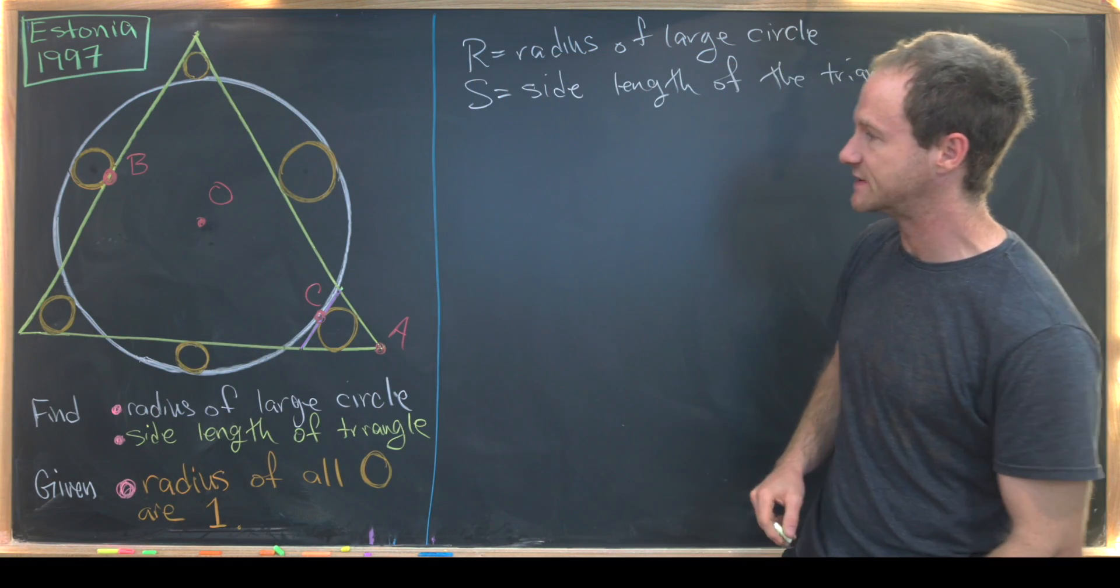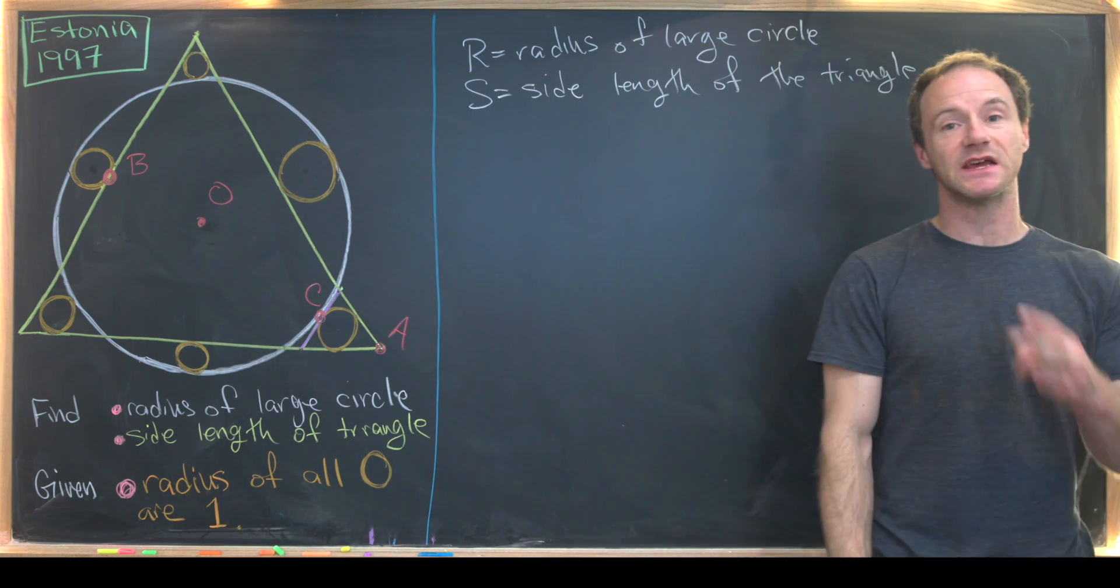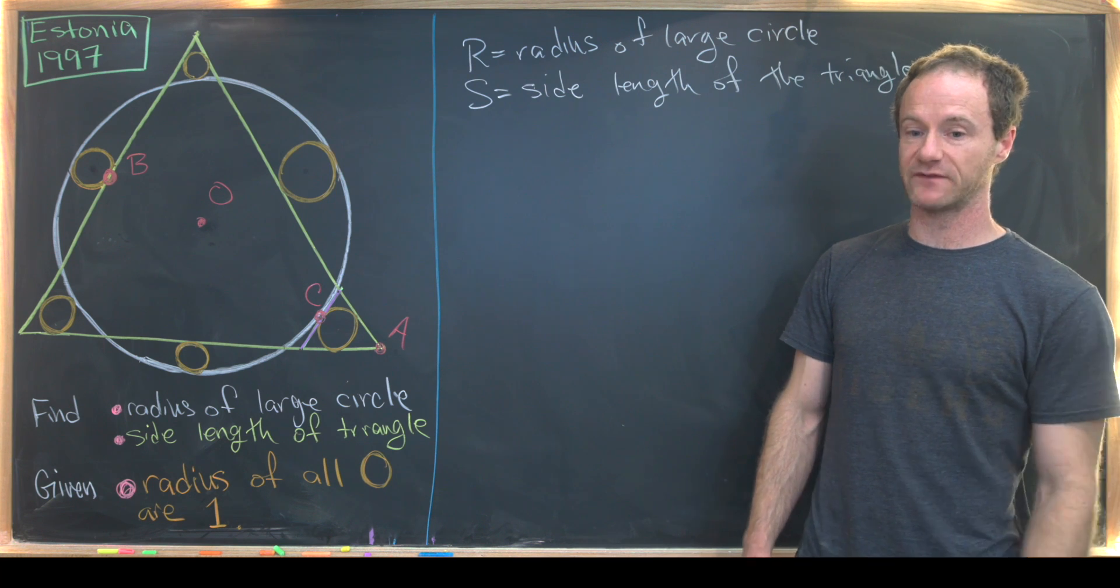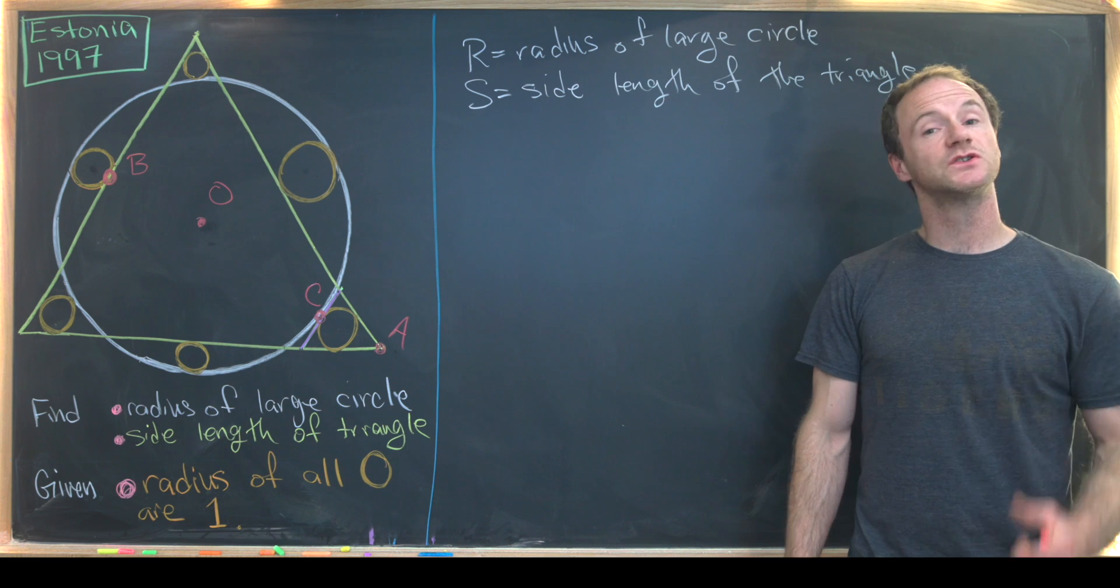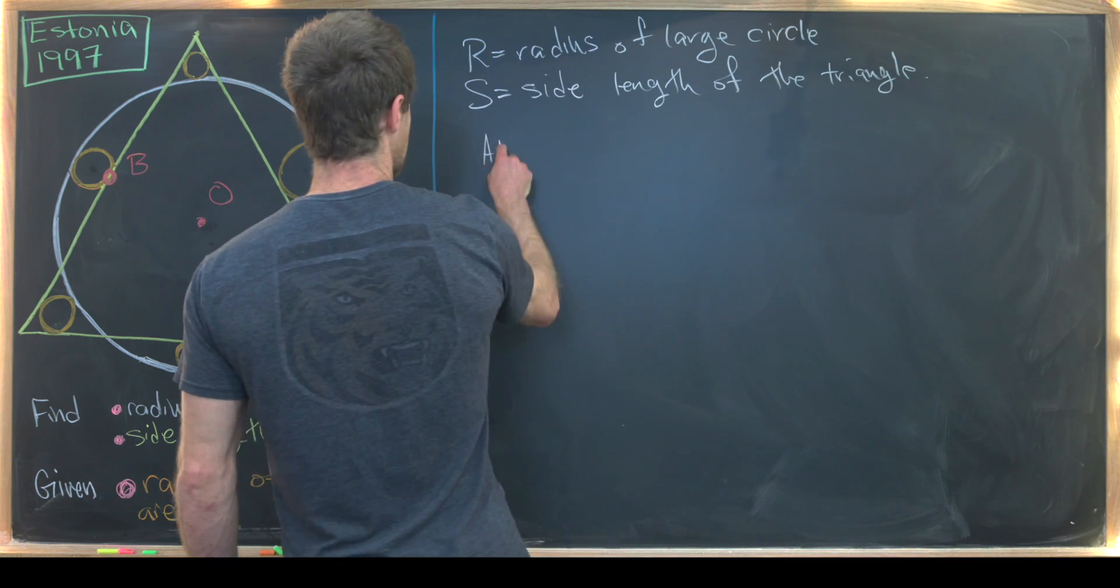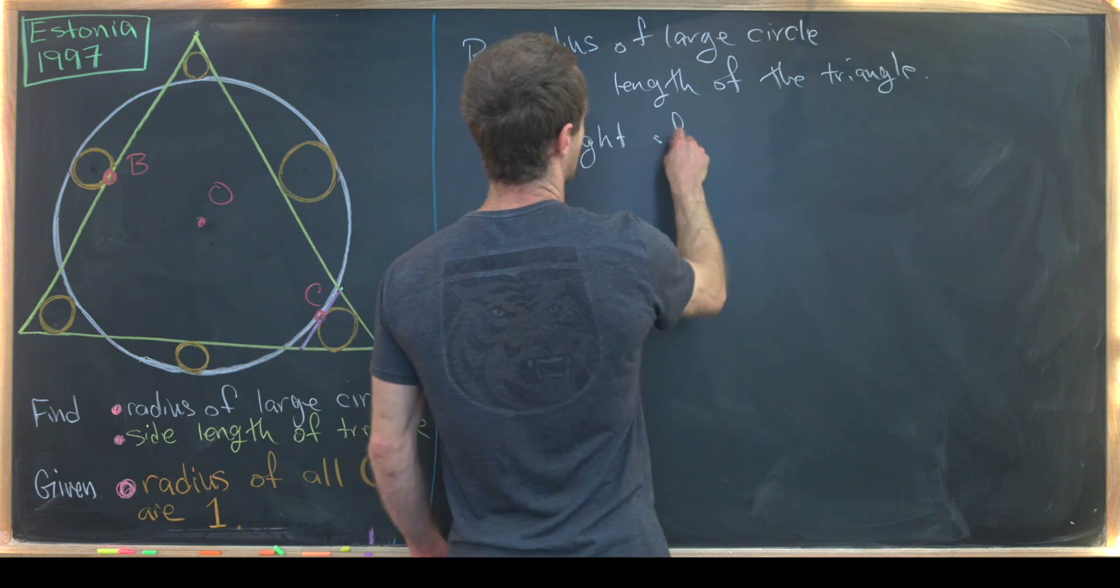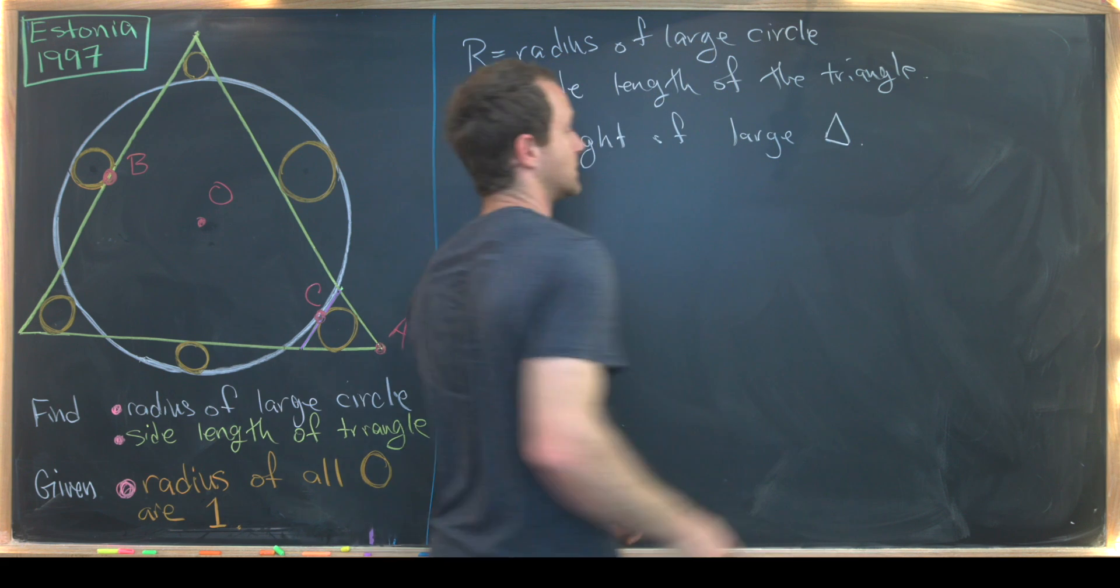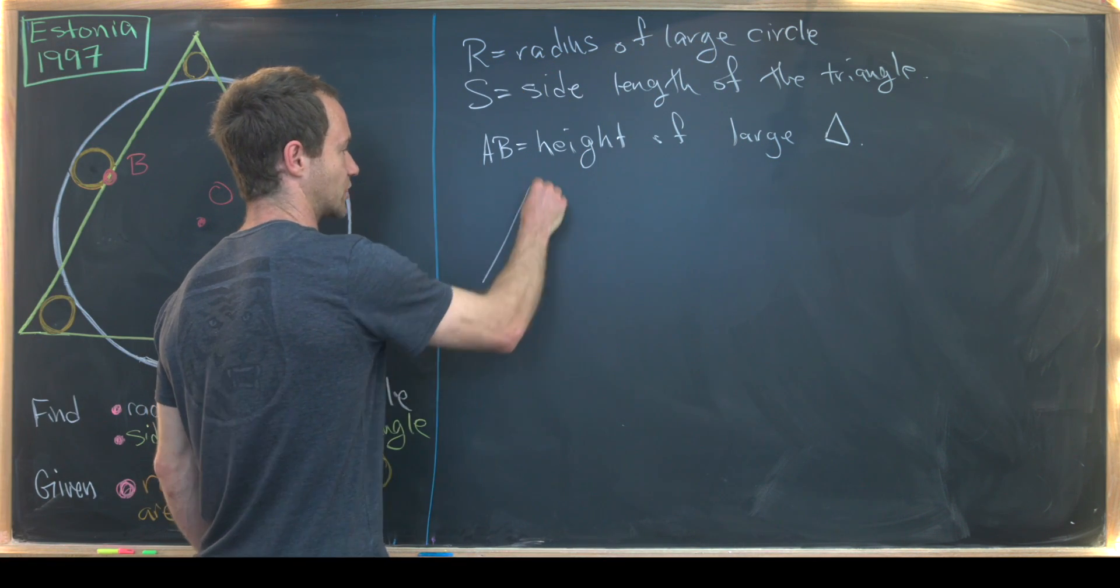And essentially what we want to do is measure the line segment length from A to B two different ways. And those two different ways will give us a nice system of equations that involves R and S. So the first way I want to do that is notice that AB is going to be exactly the height of the large triangle.